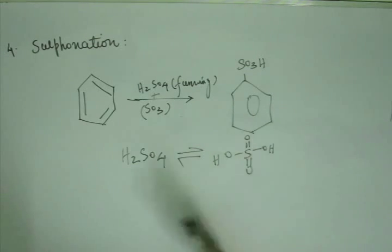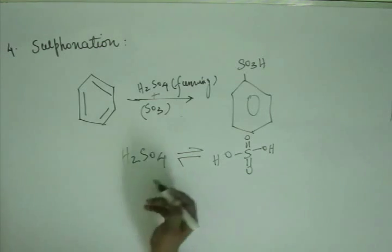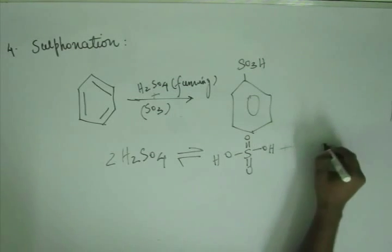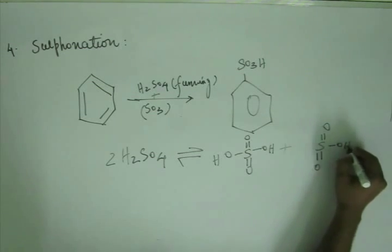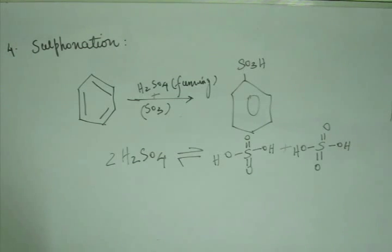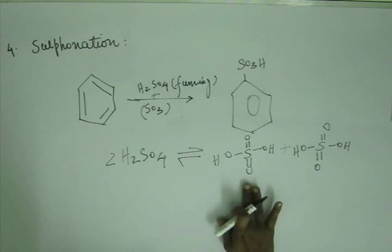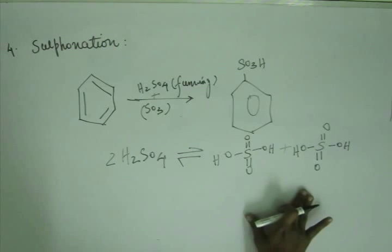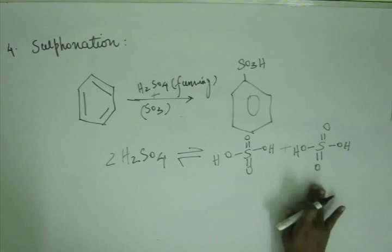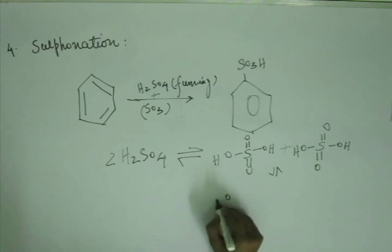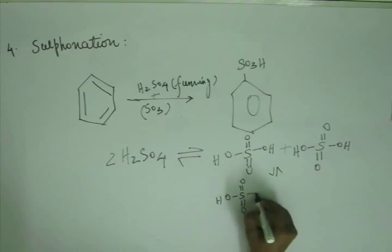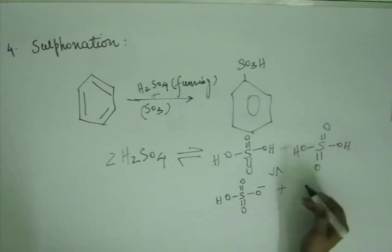Sulfonation can be carried out even with only concentrated H₂SO₄. When we take two molecules of H₂SO₄ in the absence of any other acid or base, there is no other way for sulfuric acid to protonate. As we saw in nitration, in the absence of any other base, one molecule of sulfuric acid must accept the proton given out by another. So sulfuric acid protonates another molecule of sulfuric acid, producing the sulfonyl ion, which loses H⁺ while the other molecule accepts it.